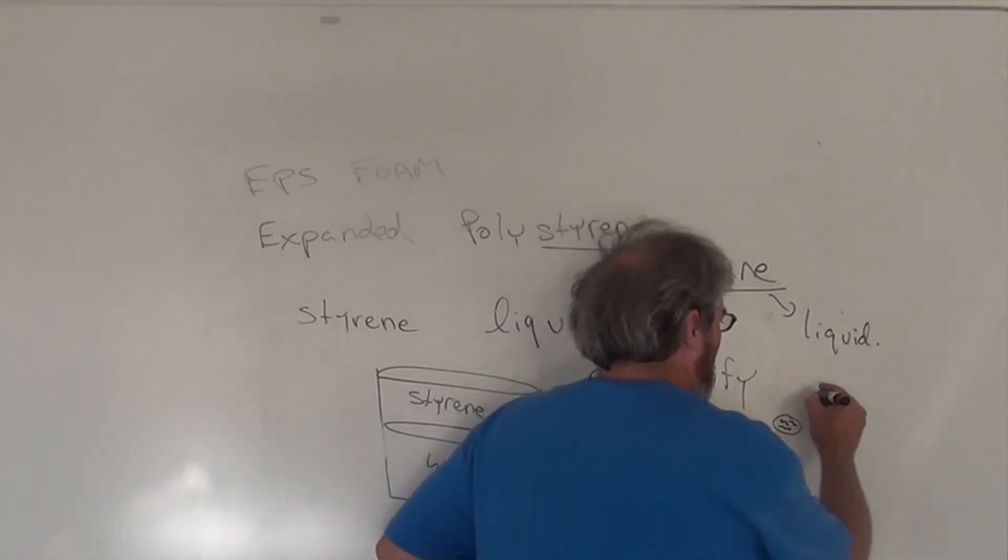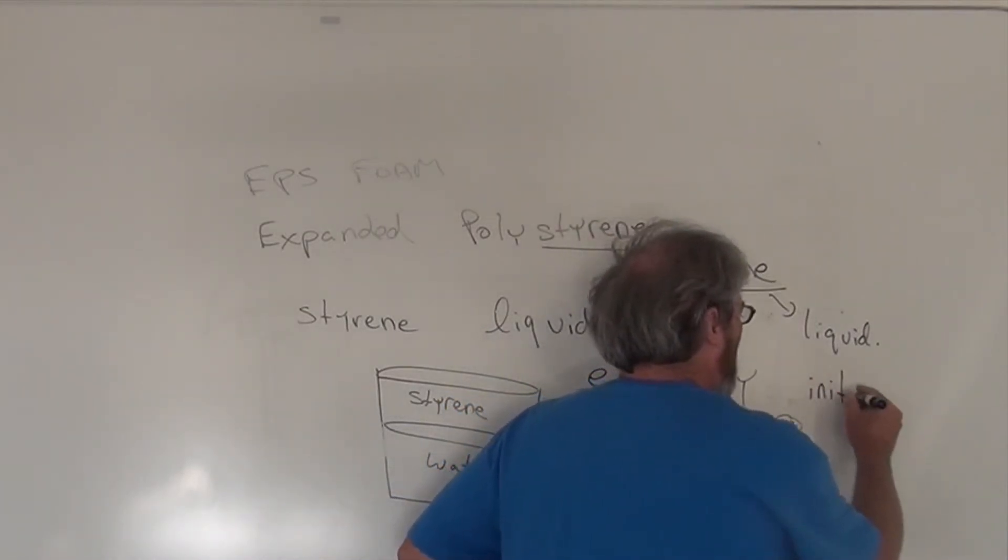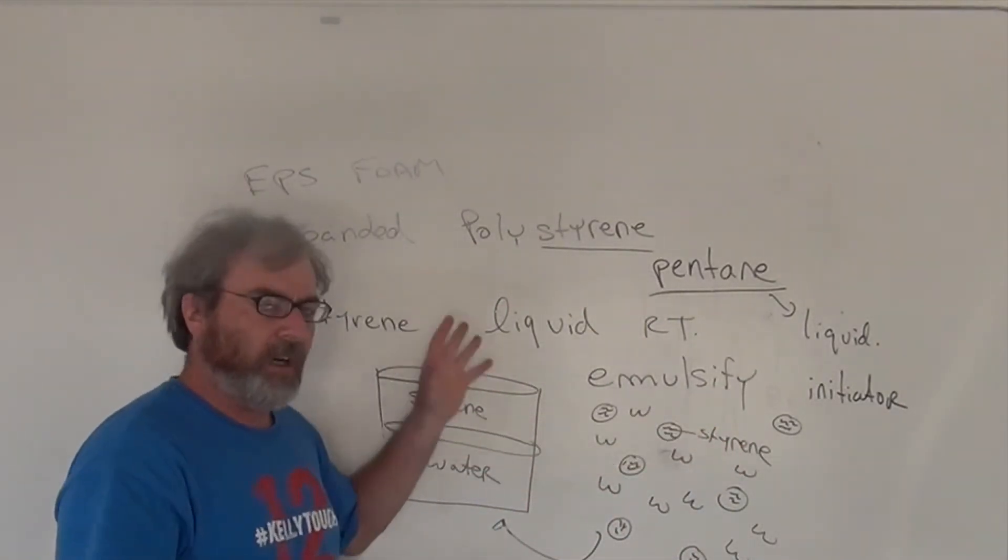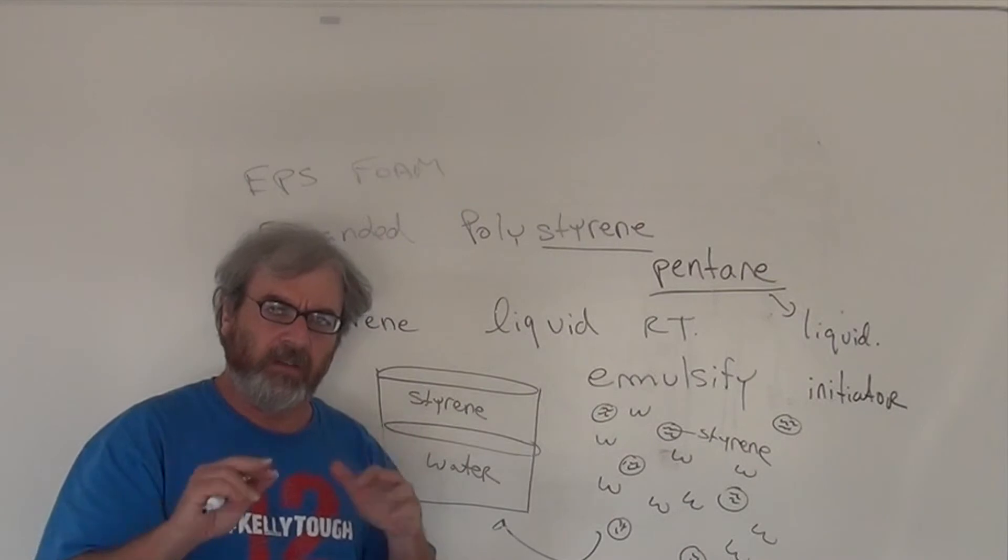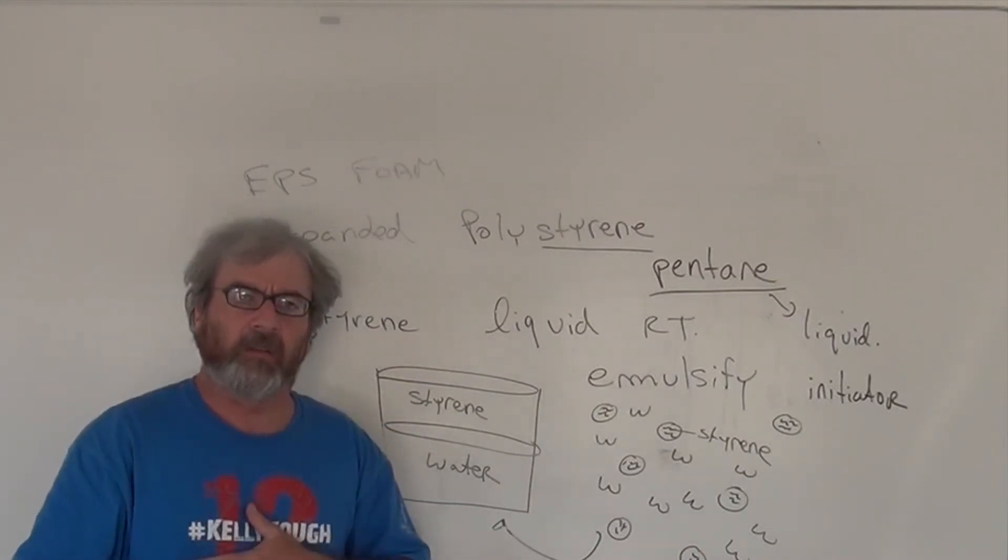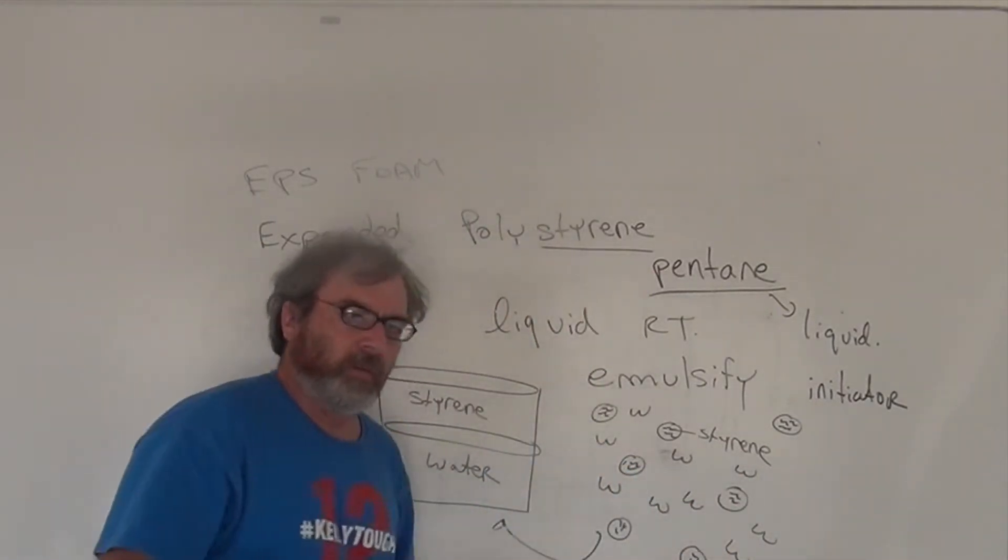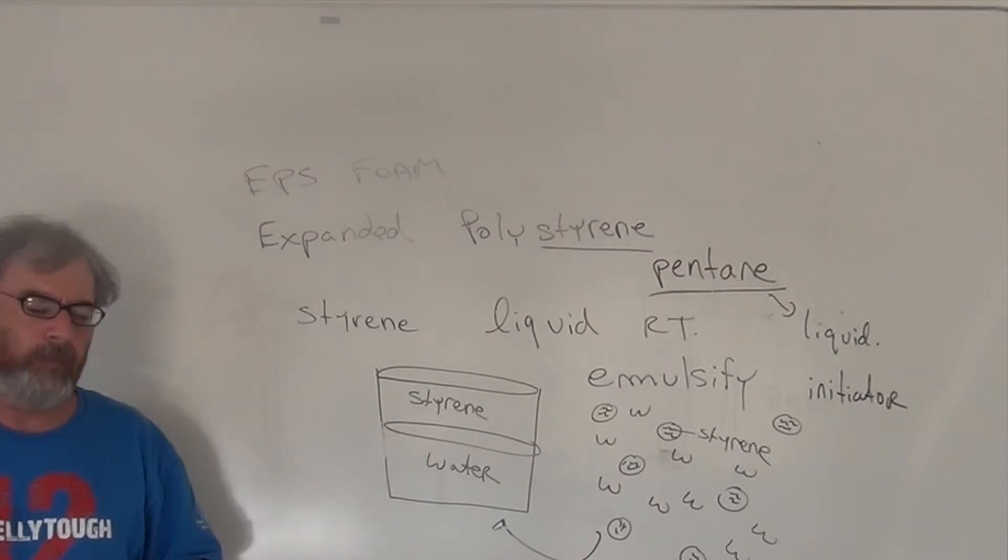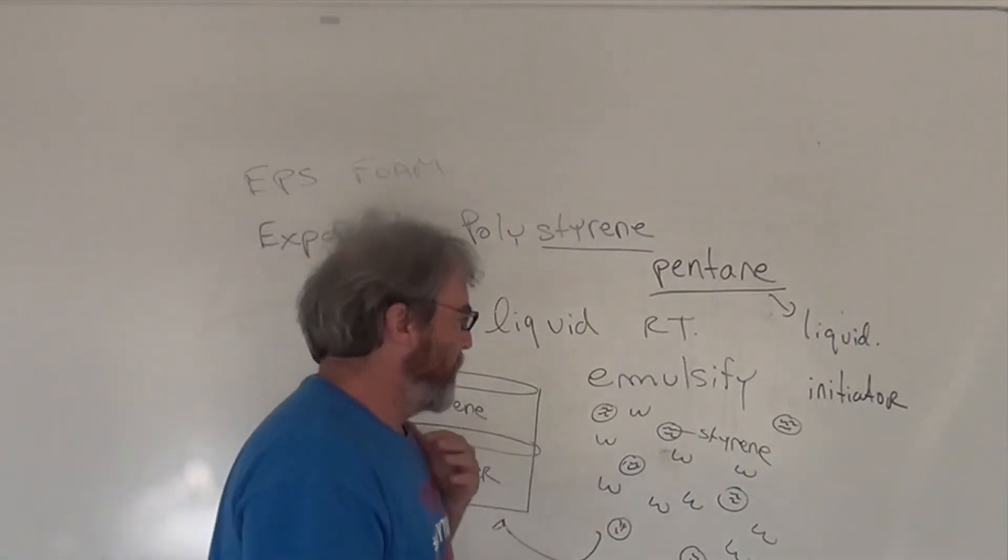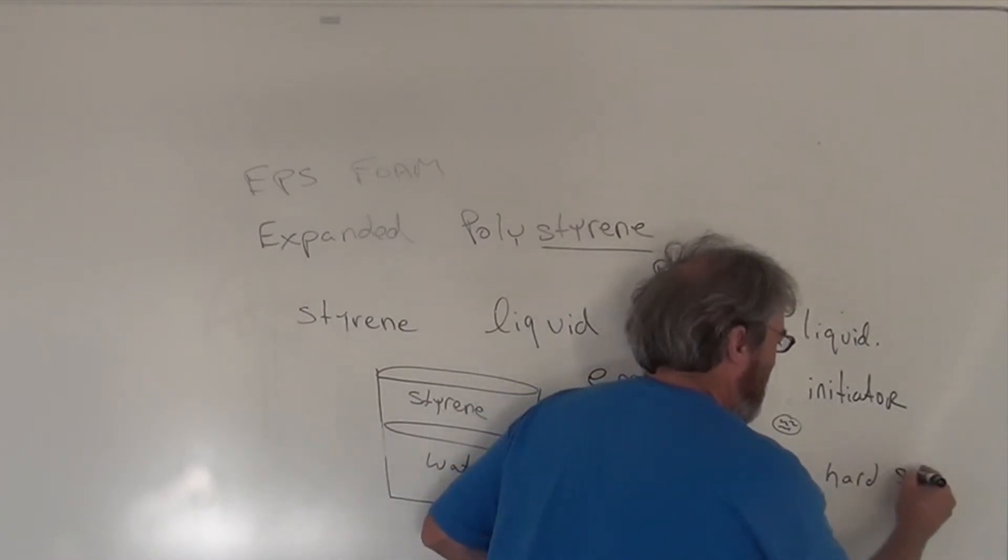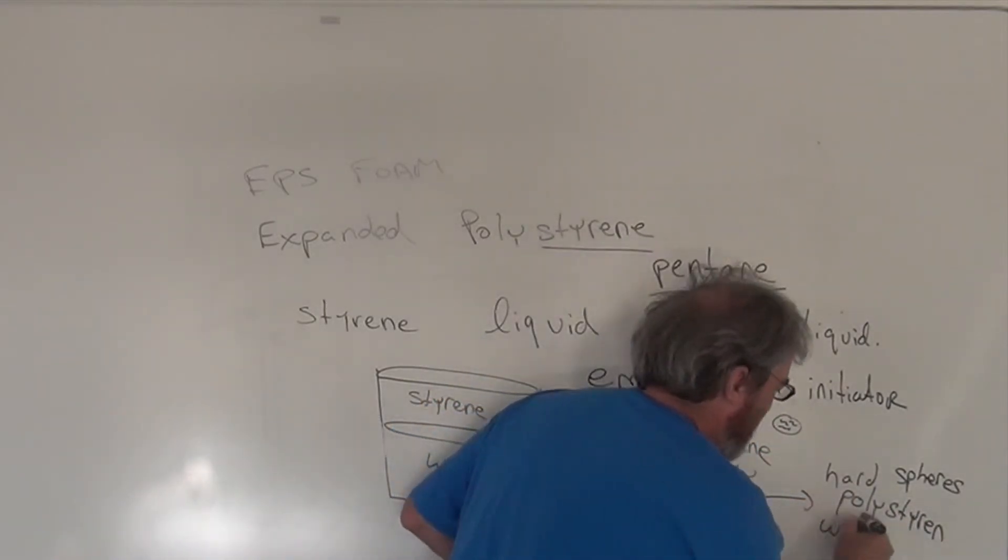So now what we do is we add what's called an initiator. And this is, I'm not going to get into the chemical details, but this causes the double bonds of styrene to link up to form the single bonds. This causes the polymerization of styrene to form polystyrene. And so what you end up with is hard spheres of polystyrene impregnated with pentane.